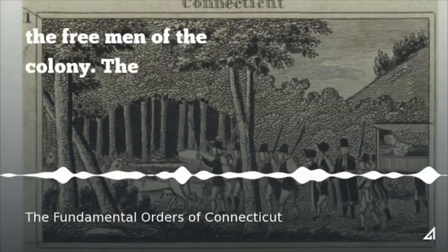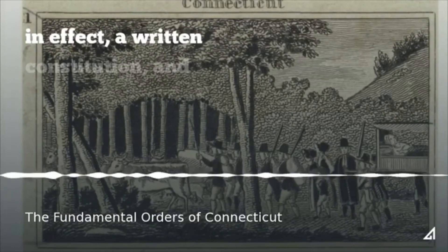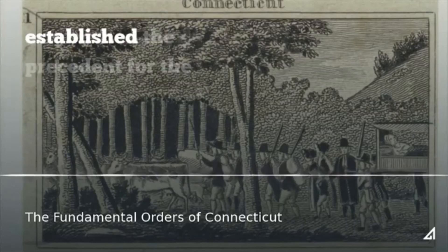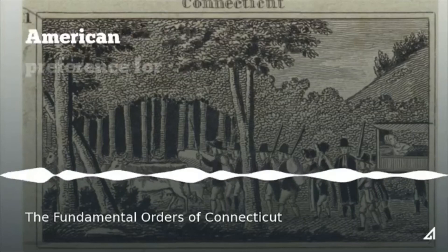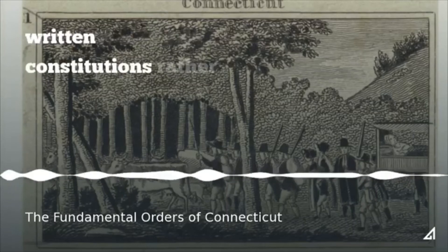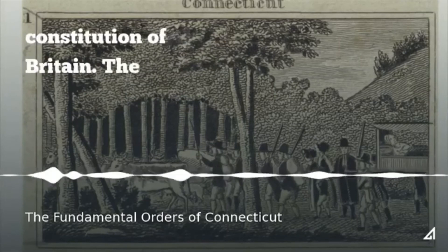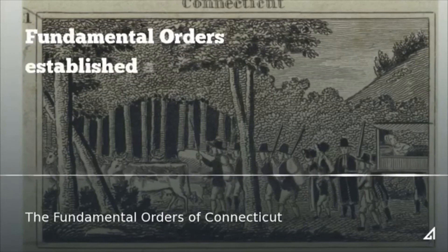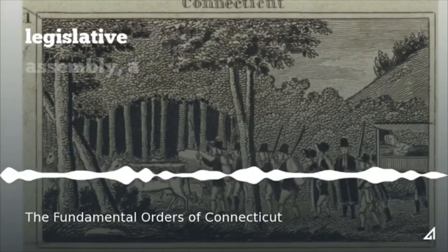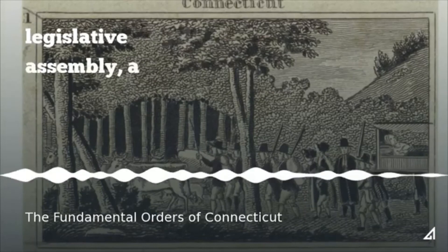The Fundamental Orders of Connecticut was, in effect, a written constitution and established the precedent for the American preference for written constitutions rather than the partially unwritten constitution of Britain. The Fundamental Orders established a legislative assembly, a governor, and a court system.